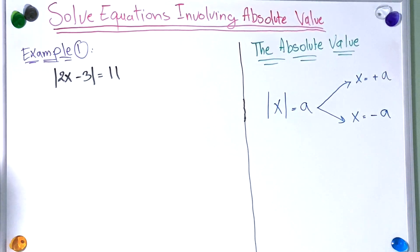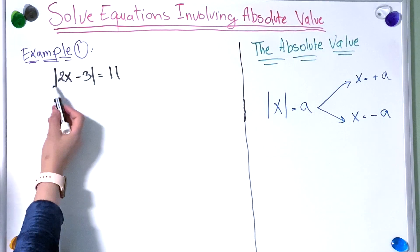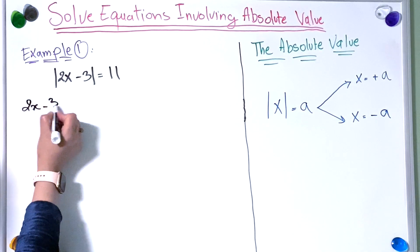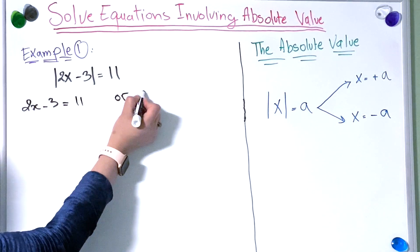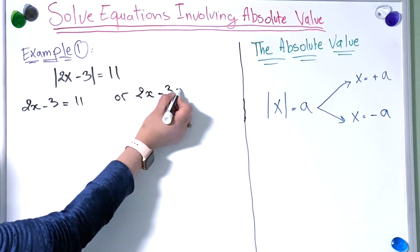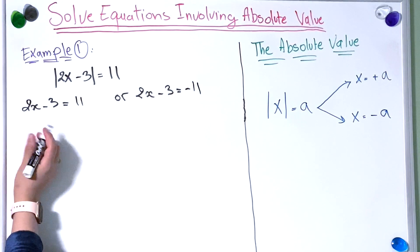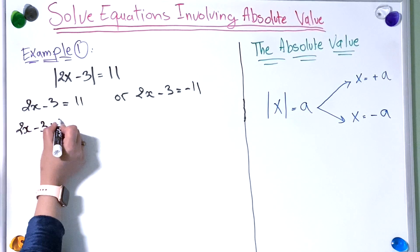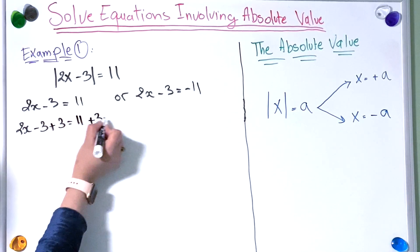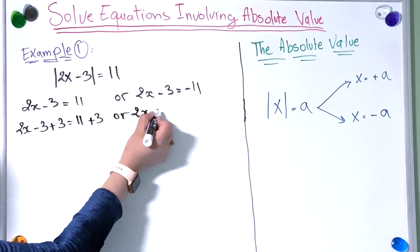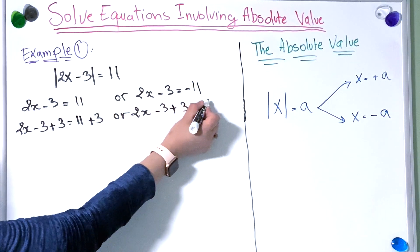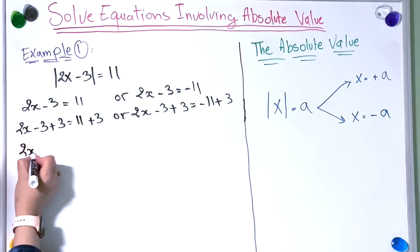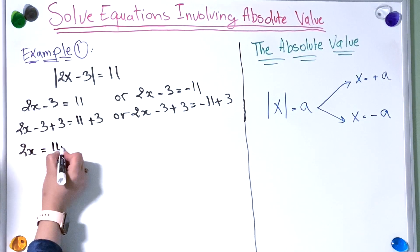Now let's move to the first example. We have the absolute value of 2x minus 3 equal to 11. So that means 2x minus 3 can equal 11 or minus 11. So we have: 2x minus 3 equal to 11, or 2x minus 3 equal to minus 11. Now we're going to add 3 to both sides: 2x minus 3 plus 3 equal to 11 plus 3, or 2x minus 3 plus 3 equal to minus 11 plus 3.